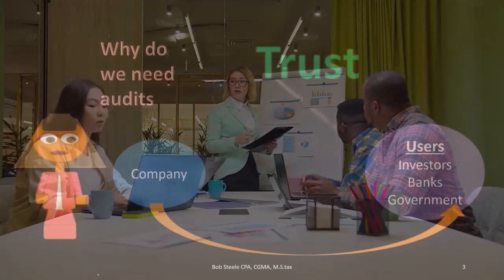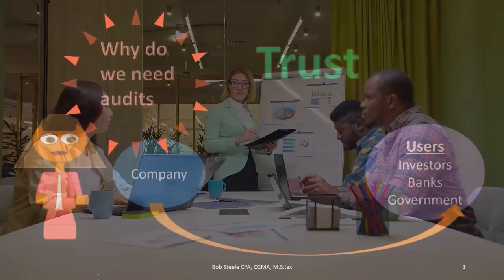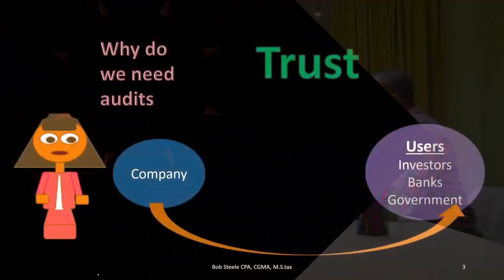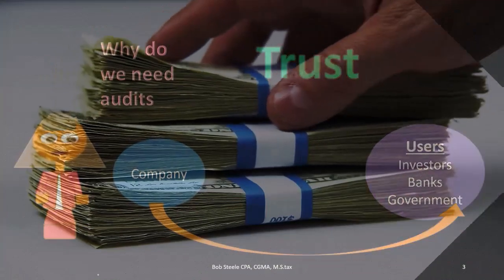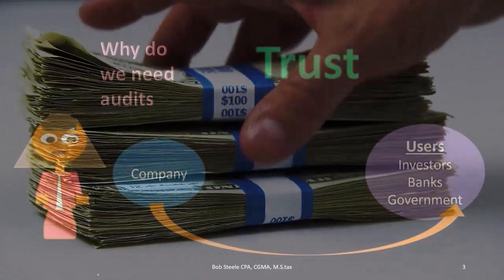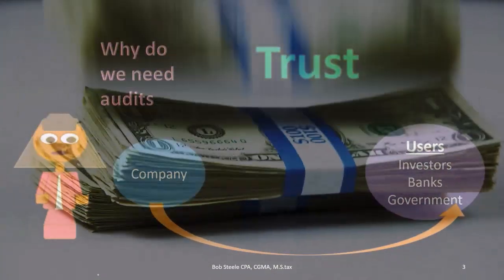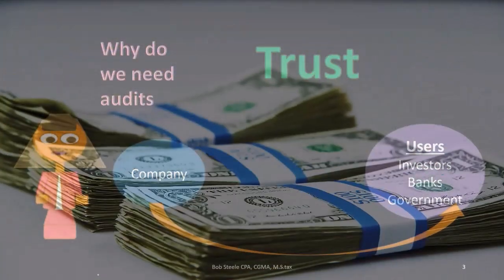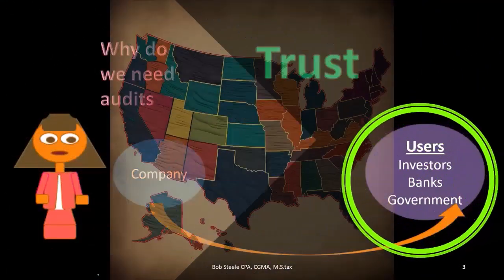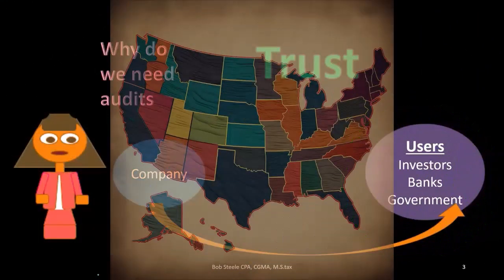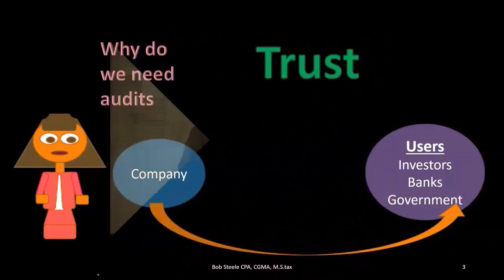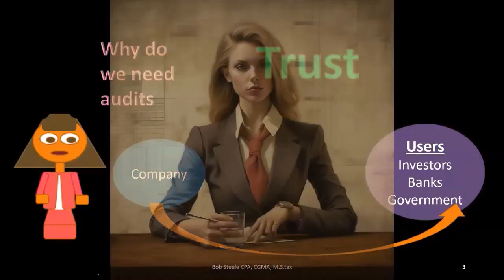If we talk about banks, we can think about banks in terms of a company possibly needing a loan and wanting that transaction. The bank, of course, wants to provide the loan because they're going to make interest on that. The government — the company may not want to do business, but they have to do business in terms of taxes in some way. And the government, of course, is going to have a need for that as well.